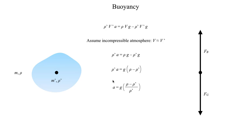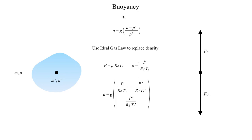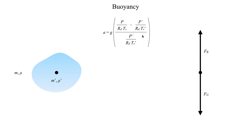We don't like working with density either, so we'll use the ideal gas law to eliminate it — the same approach used for the hypsometric equation. Doing some algebra, density equals pressure divided by the dry air gas constant times virtual temperature, where virtual temperature accounts for moisture content. Plugging that into the acceleration equation gives a complex expression. To simplify, we assume the pressure of the air parcel is approximately equal to the pressure of the surrounding air — P approximately equals P-prime. This is not always a perfect assumption, but it's usually good enough.